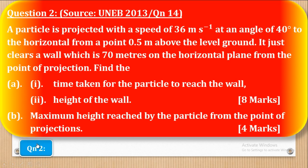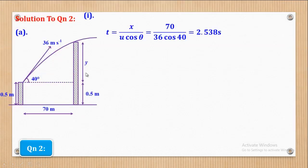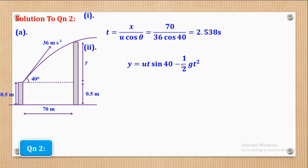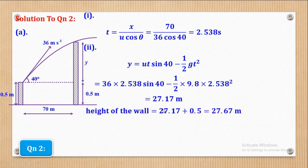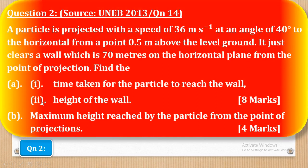For part A(ii), they want the height of the wall. First we find Y using: Y = Ut sin 40° − ½GT². Substituting T = 2.538, U = 36, and G = 9.8, and simplifying gives Y = 27.17 meters. The total height of the wall is then Y + 0.5 = 27.17 + 0.5 = 27.67 meters. That completes part A.